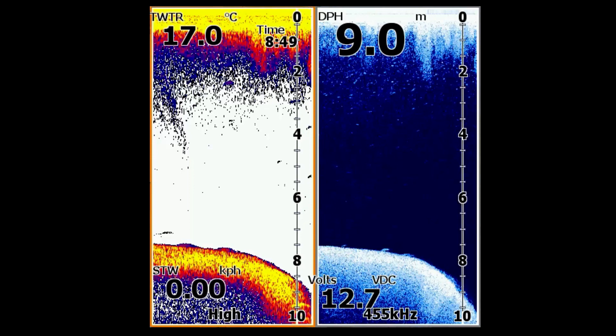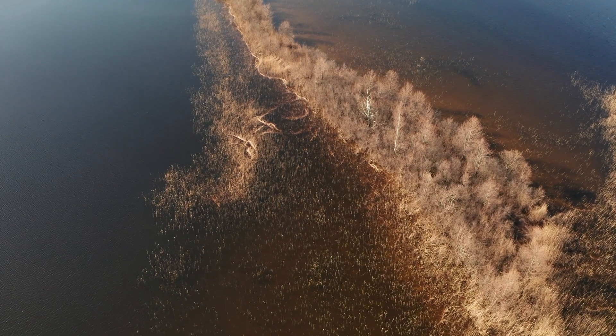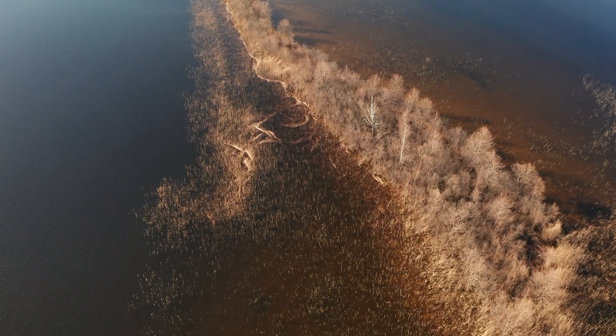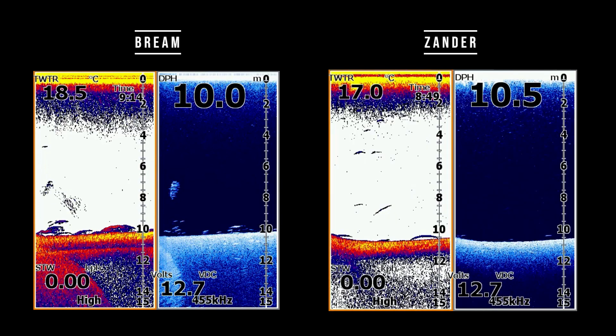Once you can separate the zander from the bottom, the next task is to separate it from bream. Sometimes bream swim in small schools close to the bottom. Comparing the two: bream symbols are wider, while zander do not like to be close to each other — they keep a distance between themselves. Bream can be close to or above each other. Zander are also more often closer to the bottom than bream.